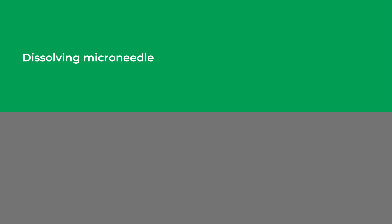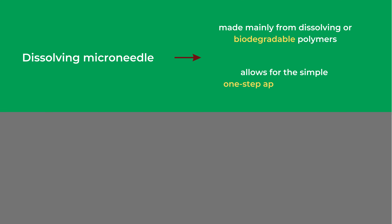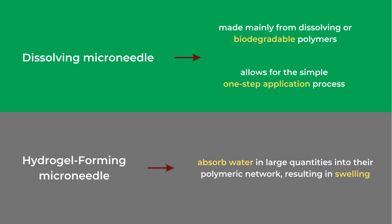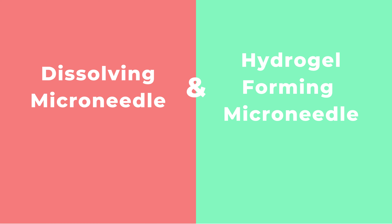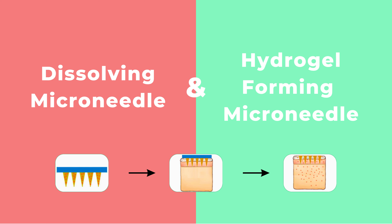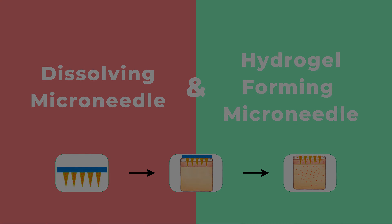Dissolving microneedles are made mainly from dissolving or biodegradable polymers and allow for a simple one-step application process. Hydrogel-forming microneedles absorb water in large quantities into their polymeric network, resulting in swelling. The mechanism of both dissolving and hydrogel-forming microneedle drug delivery is termed poke and release. Both strategies eliminate the need for special measures for discarding the needle and reduce the risk of inadvertent reuse.